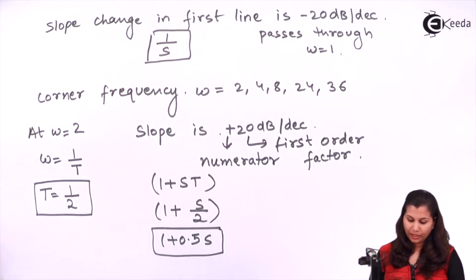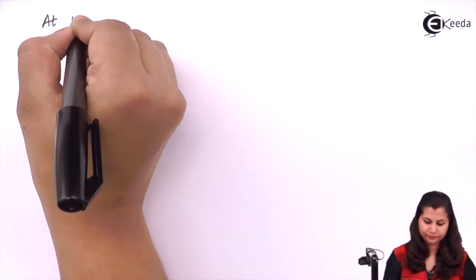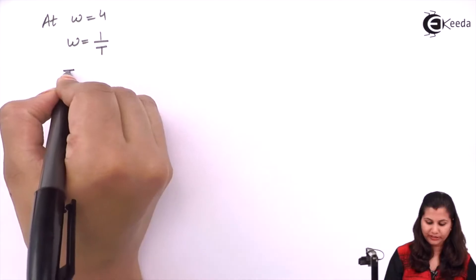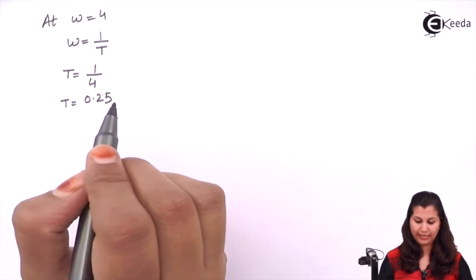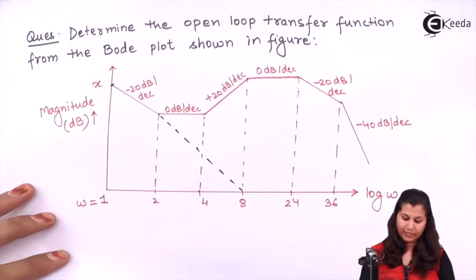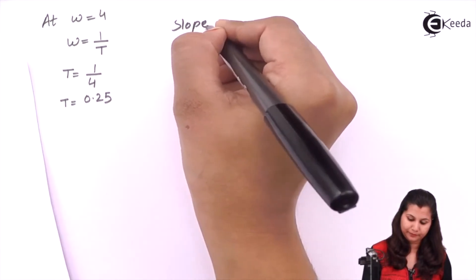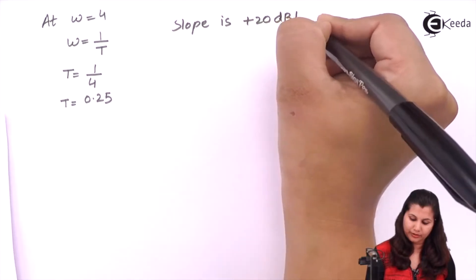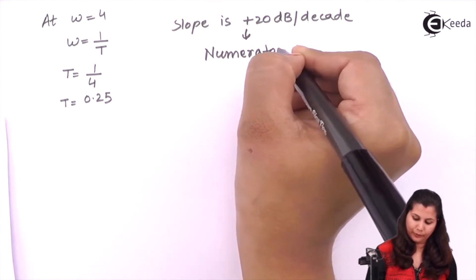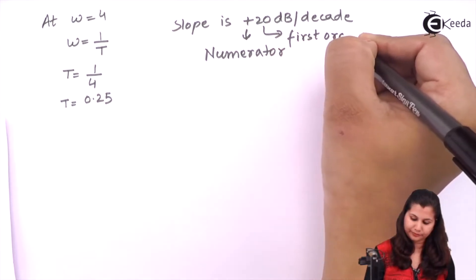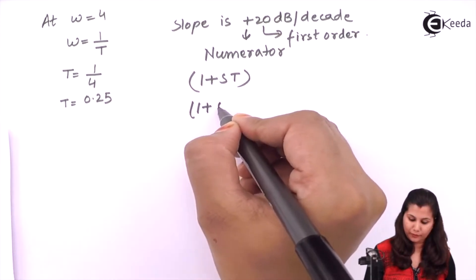At omega equals 4: T = 1/4 = 0.25. The slope changes from 0 dB to plus 20 dB per decade, a change of plus 20 dB per decade. Plus means this factor is in the numerator, and 20 means it is again a first order factor. Writing in (1 + sT) form, the factor is 1 + 0.25s.